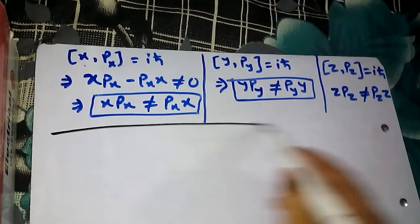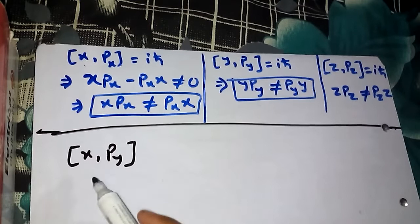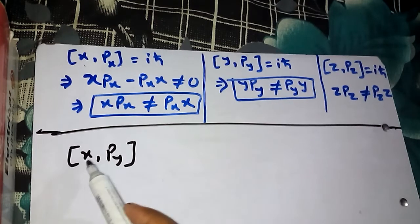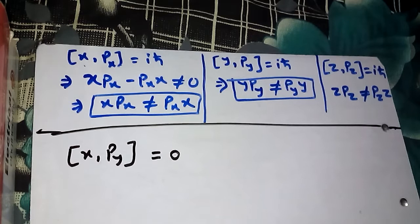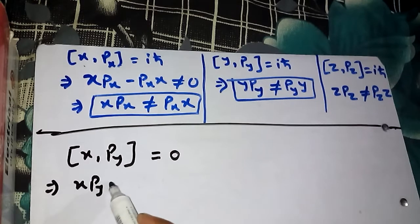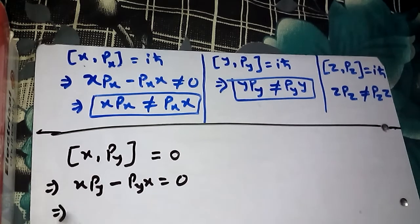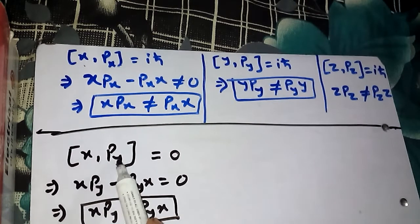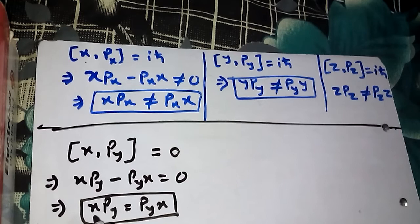But in our last video we saw that if we have X and Py — the X component of position and Y component of momentum — the commutator is not iħ but zero. When it is zero, that means X·Py minus Py·X equals zero, so XPy equals PyX. For X and Py, order doesn't matter — whether you put X first or Py first, they are the same.